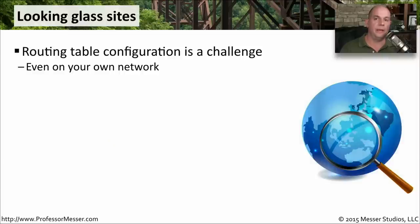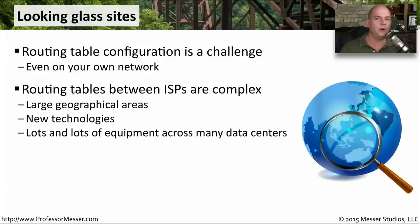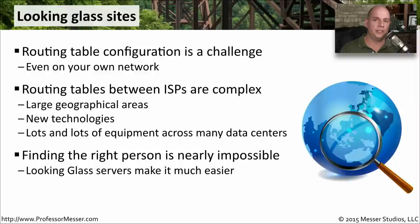If you're an ISP, one of your biggest troubleshooting challenges revolves around routing tables. Routing tables, especially at an ISP, are remarkably complex. There are very large geographical areas, new technologies being used for these routes all the time, and all kinds of different equipment used between different data centers — all of which can have an impact on the routing table. Another challenge is that there are many different ISPs with many different connections and many different people supporting all of these links.